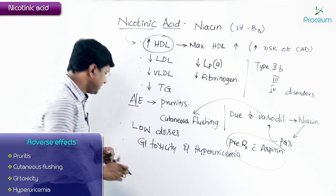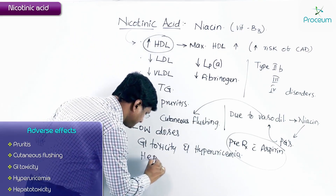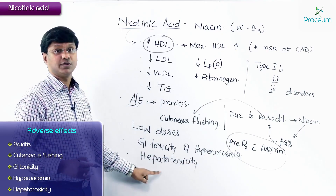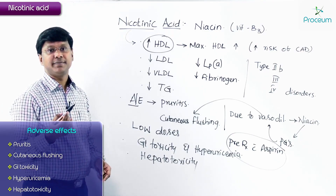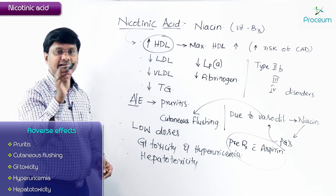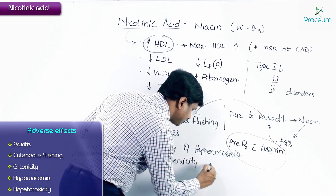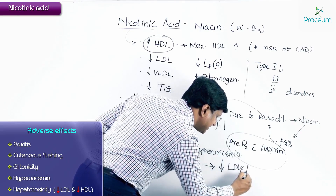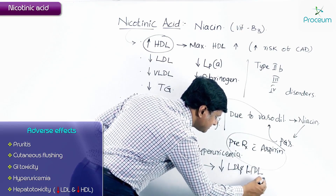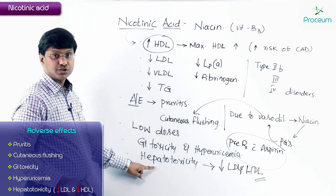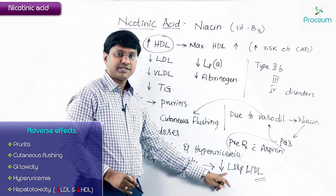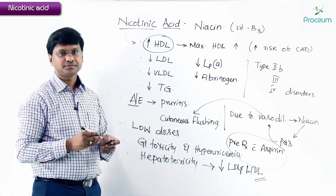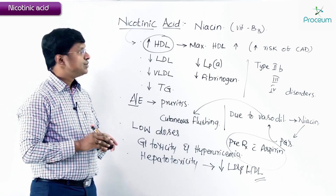Apart from hyperuricemia and gastrointestinal toxicity, niacin can also lead to hepatotoxicity. This hepatotoxicity is manifested by a fall in both LDL and HDL cholesterol. So because of hepatotoxicity, niacin can cause a decrease in both LDL and HDL cholesterol levels.